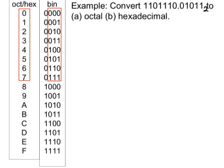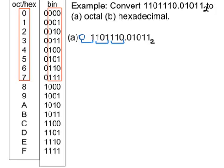Now let's convert this binary number to octal and hexadecimal. Let's do the octal conversion first. What I do is I group the binary numbers beginning from the fractional point and moving left into groups of three. The first group of three is 110, the next group of three is 101, and the last group — I don't have enough digits, so I add two zeros — giving 001. Then going back to the fractional point, I move to the right and group again in threes: 010, and then 11 — I'm missing a digit, so I add a zero, giving 110.